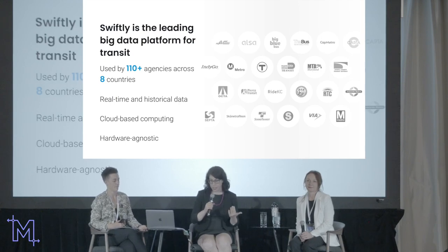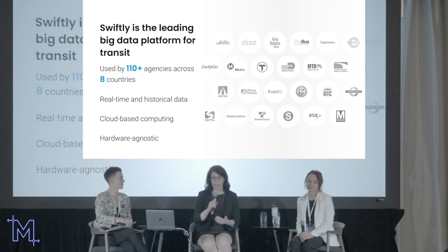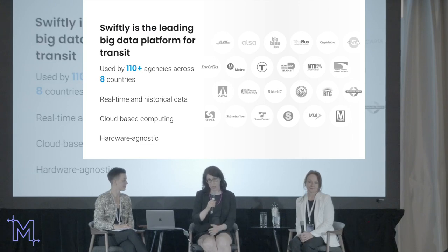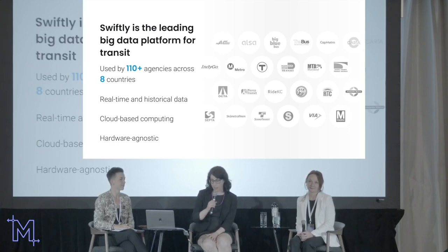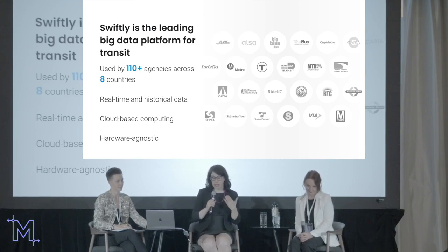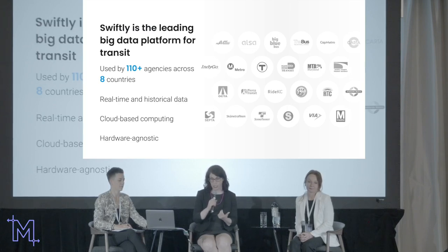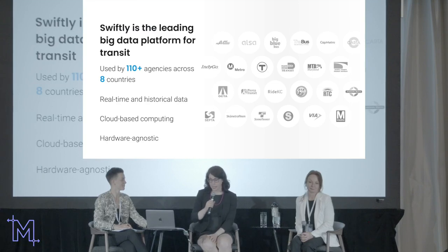Swiftly is the leading big data platform in transit, used by over 110 agencies now and we're adding new agencies every single day. We work with small agencies and big agencies — as small as two buses, like Catalina Island and Avalon, and a rural agency in Wyoming with only three vehicles. We also work with very large agencies like SEPTA Philadelphia, LA Metro, and most recently MARTA in Atlanta. We provide both real-time and historical data as a software-as-a-service using cloud-based computing with no hardware — we are hardware agnostic, integrating with existing or off-the-shelf hardware for faster implementation.